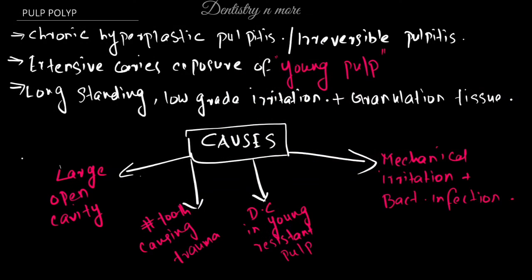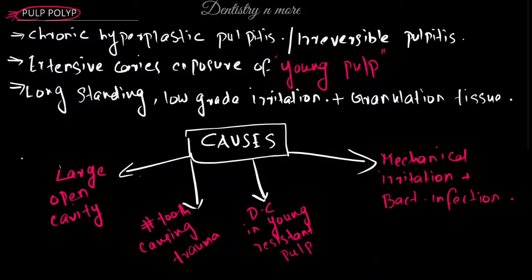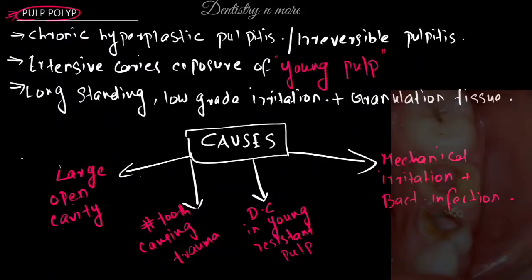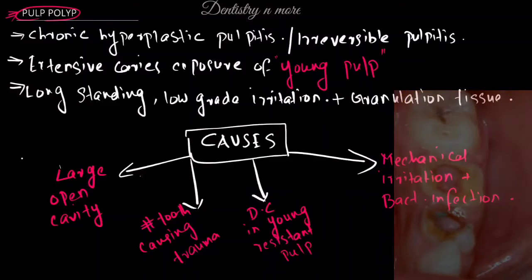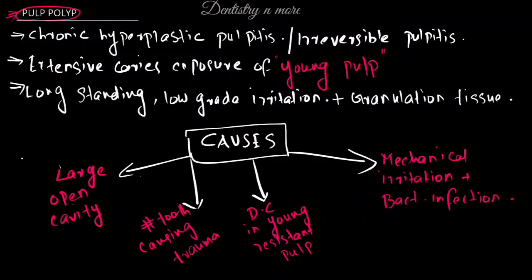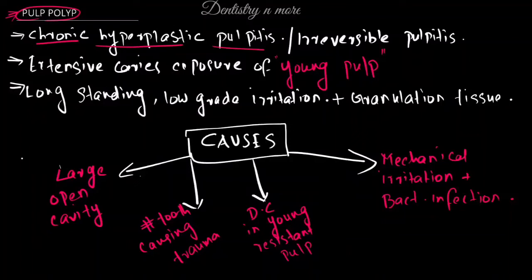Welcome back to another session in dentistry and more. Today we will be seeing a small topic from oral pathology or oral medicine — that is pulp polyp. There are two types of polyp: gingival polyp and pulp polyp. Gingival polyp, as the name indicates, starts from the gingiva, and similarly the pulp polyp starts from the pulp. Pulp polyp is also known as proliferative pulpitis or chronic hyperplastic pulpitis.